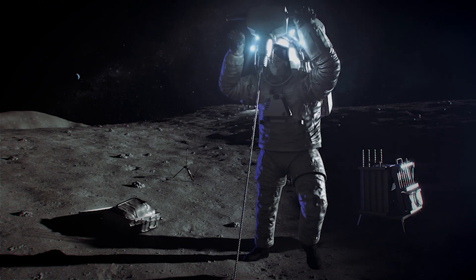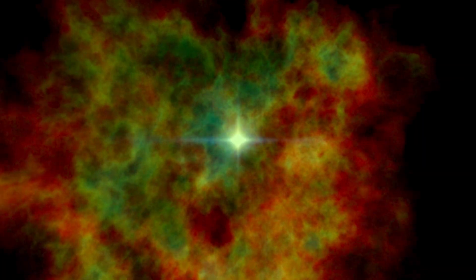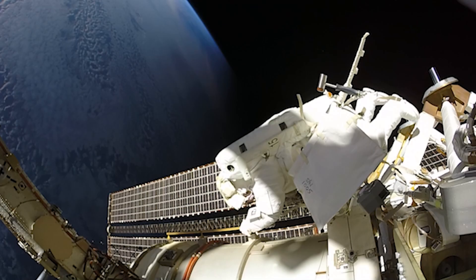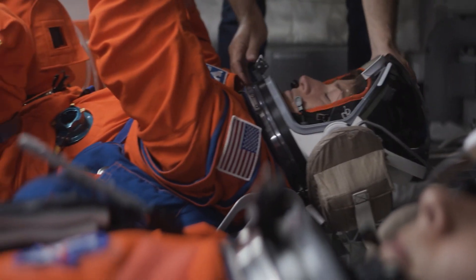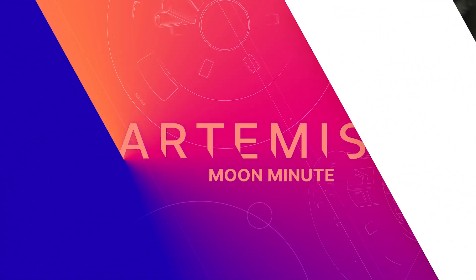We currently monitor changes to space radiation levels from both solar storms and GCRs, thanks to NOAA's GOES satellites. EVAs can be rescheduled, and NASA has areas inside Orion where astronauts can take shelter during space weather storms. And that's been your Artemis Moon Minute.